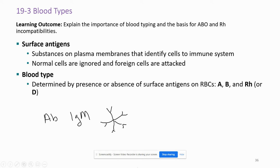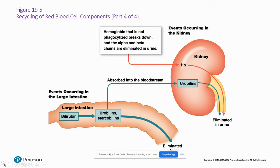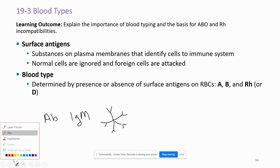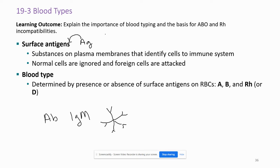So this is where we left off on blood — this is where we're picking up. So the blood types: when you guys hear me talk about these, I call these surface antigens. I abbreviate them AG. They are on the plasma membrane of the red blood cells. There are surface antigens on all types of cells in the body, but we're focusing on red blood cells.